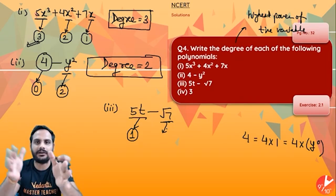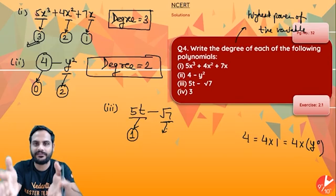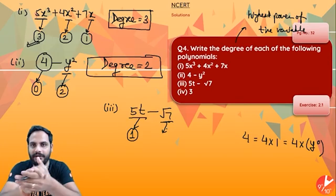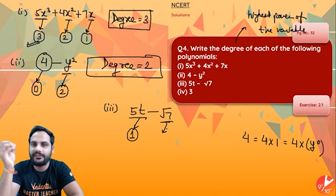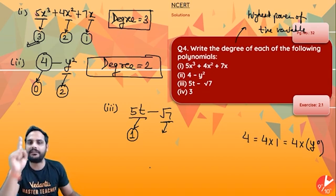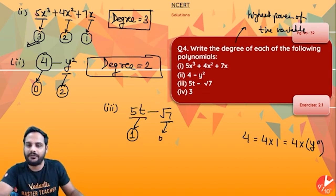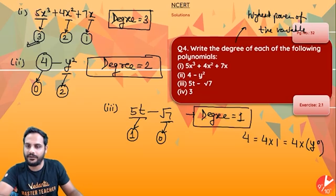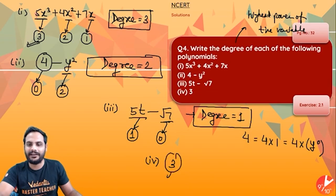Understand, the question is highest power of the variable. √7 is an irrational number, it is a constant number at a particular value. Since it is a constant term, whenever there is a constant term the power will be 0 for the variable. So the degree is 1, that is a linear polynomial. Fourth one: 3 is a constant term, degree is 0.